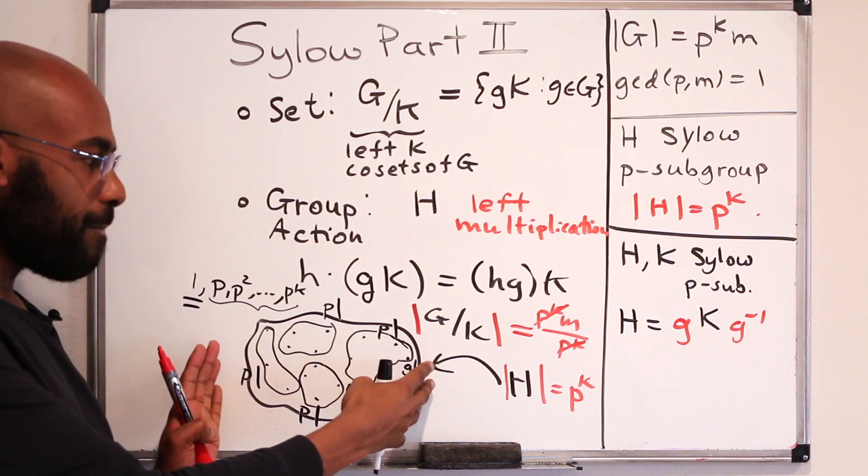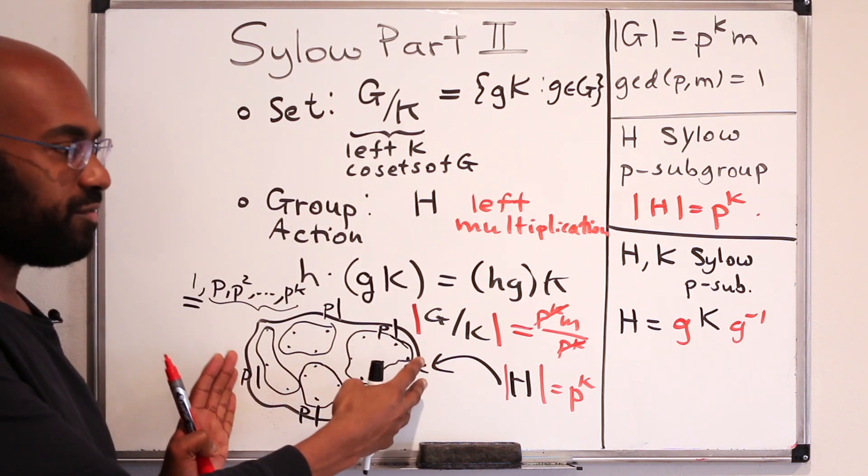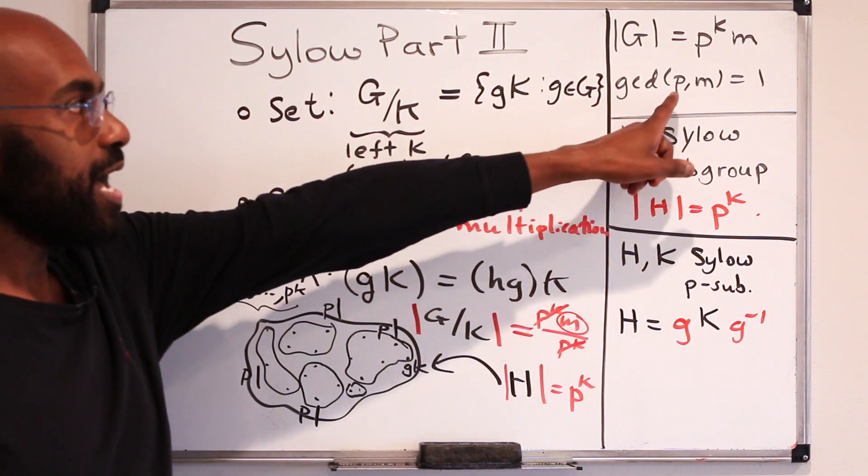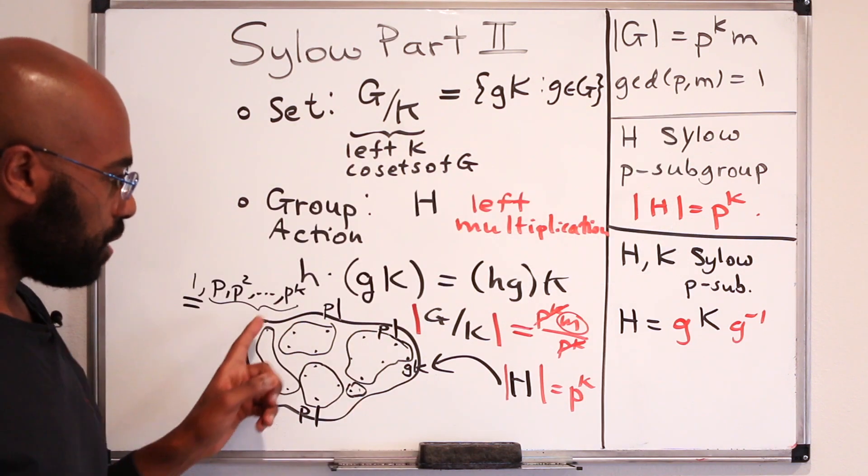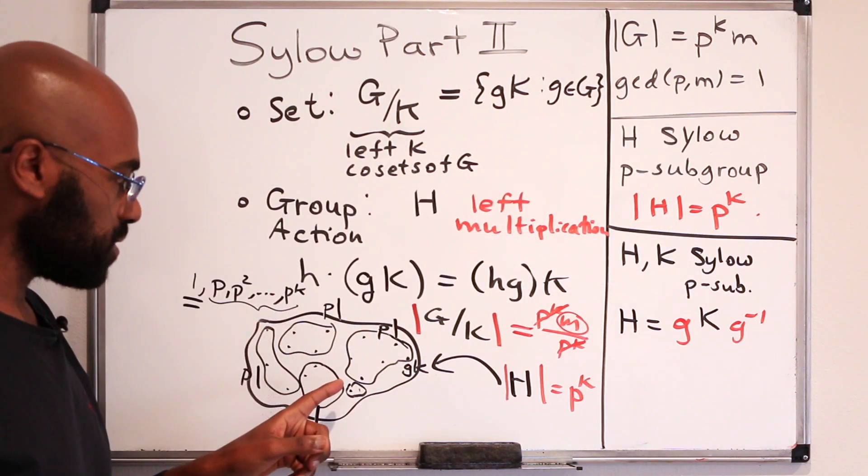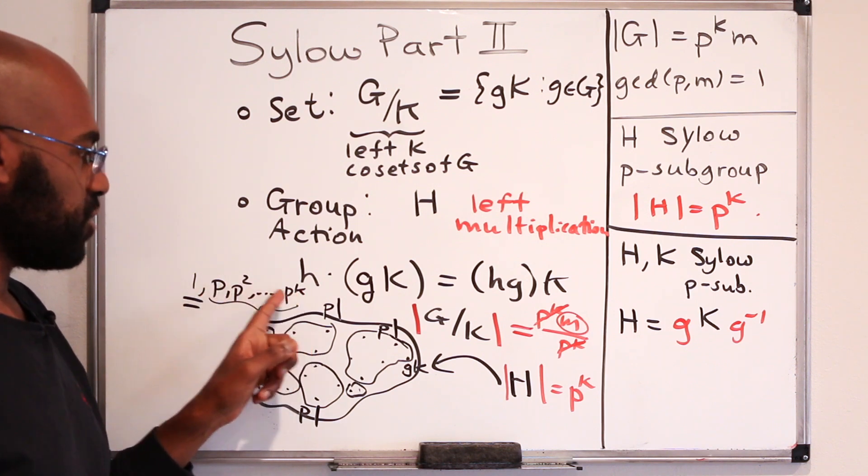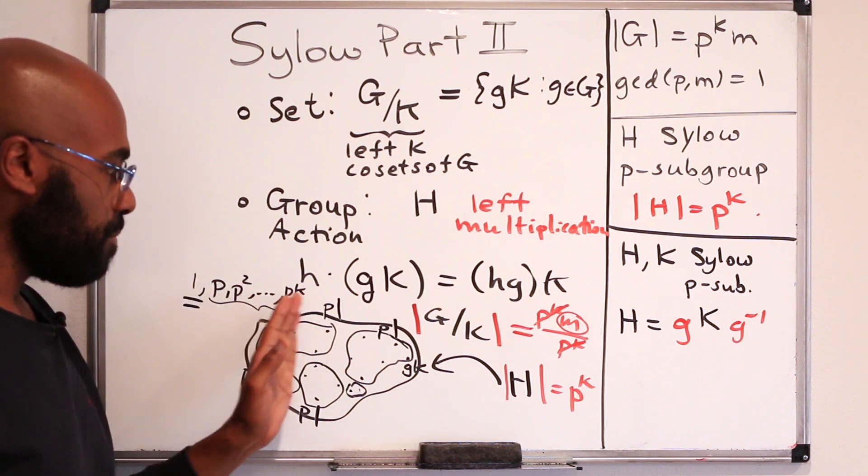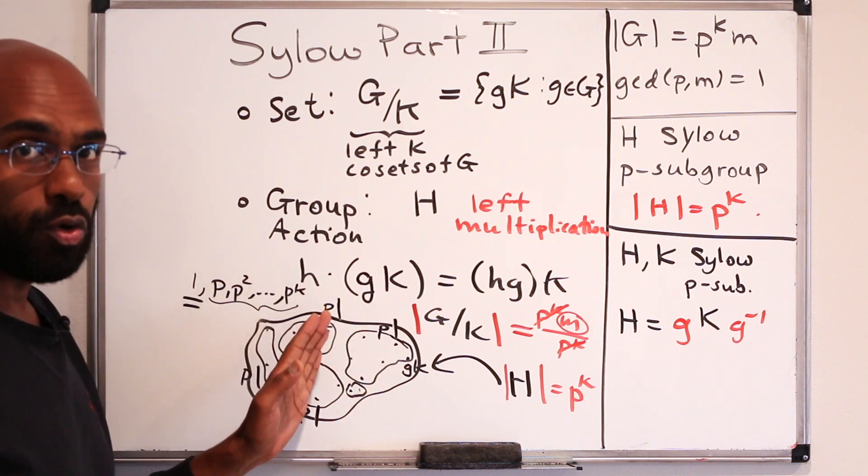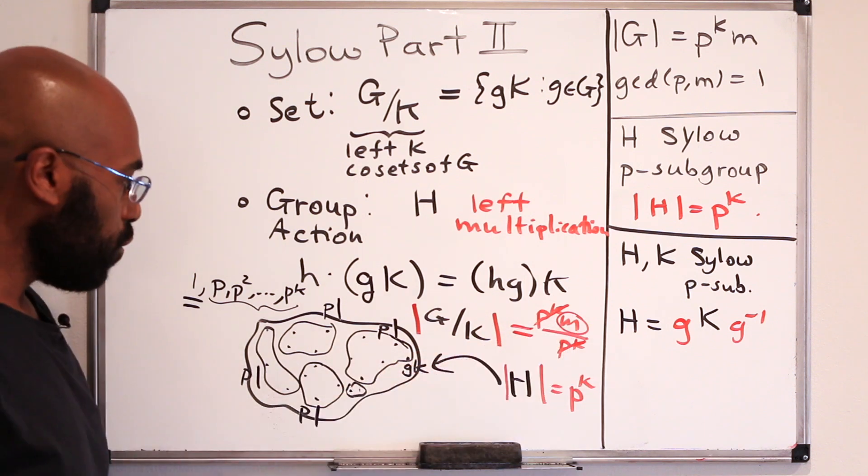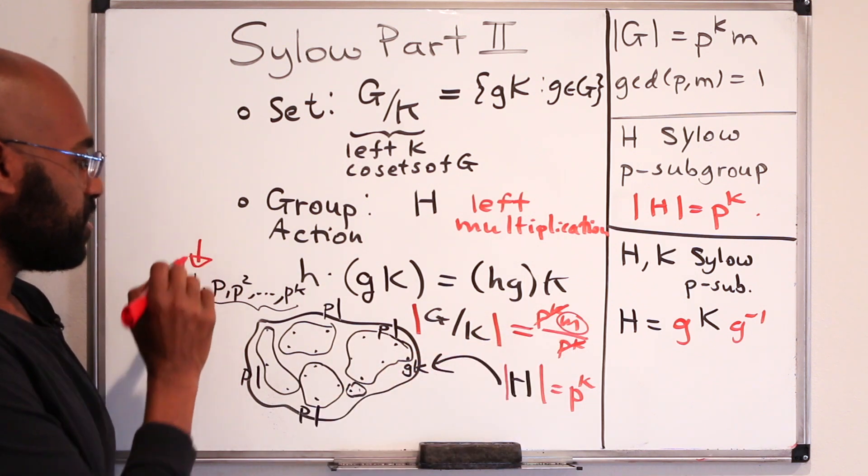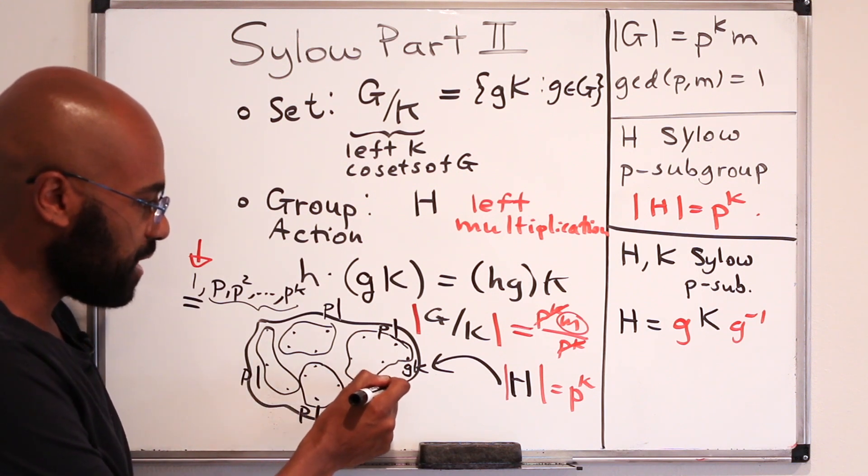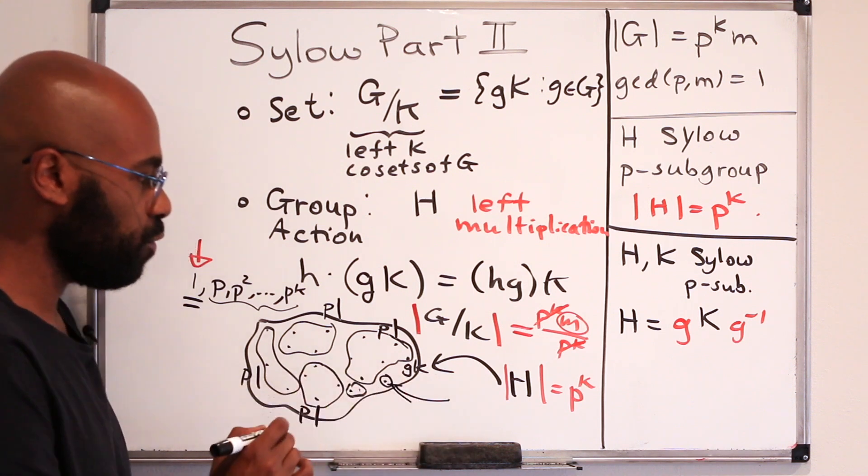But the total number of elements in this set, the total number of left K cosets, is this number right here, M. And M does not have P as a factor. So if we look at all of these different orbits, we can't have all of them being these sizes right over here from P, P squared onward. Because if we did, then the number of left K cosets we'd have in total would be a multiple of P, but it's not. So there has to be at least one left K coset whose orbit is itself.